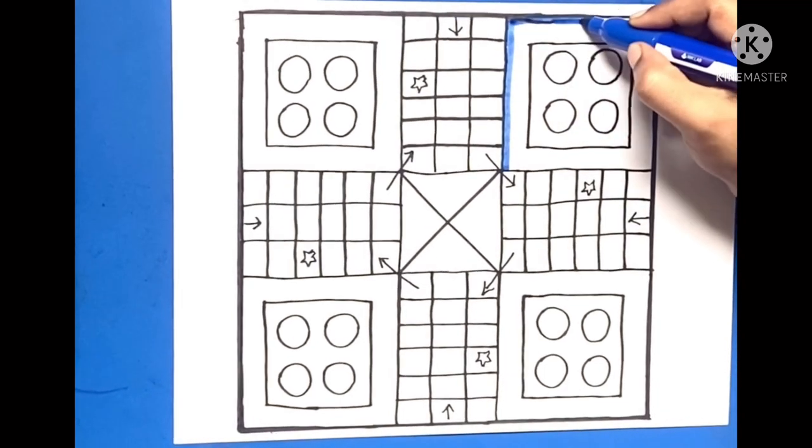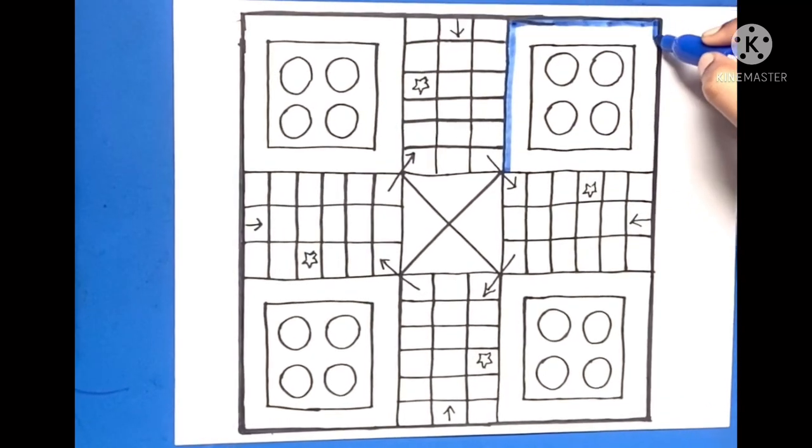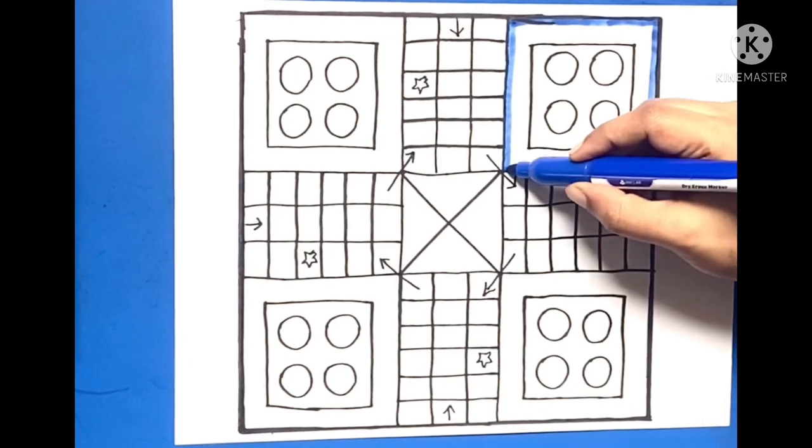Let's start coloring. Blue color. First give the boundary and then start filling the color inside.